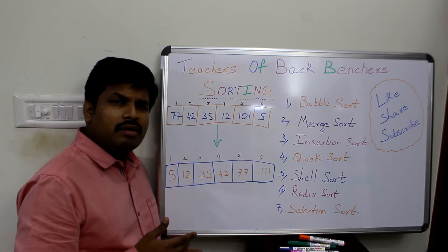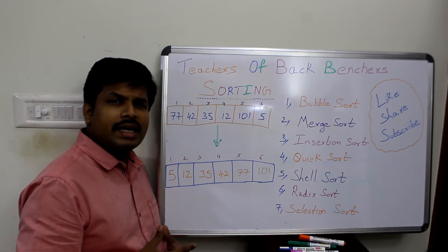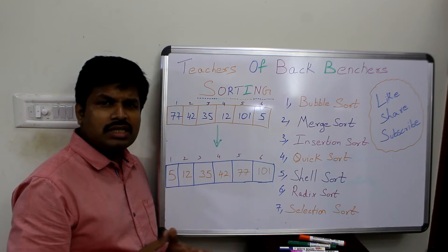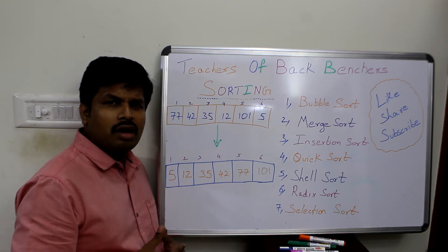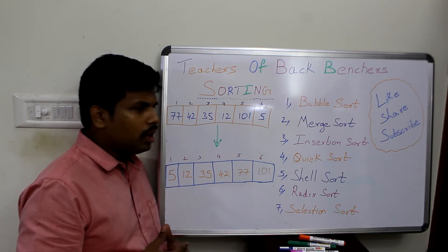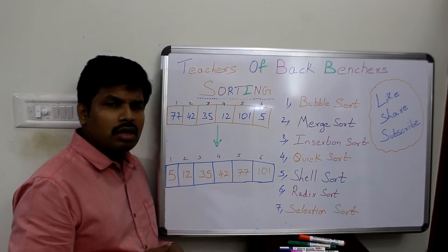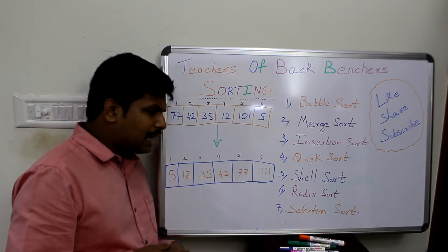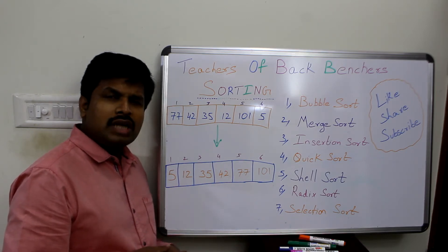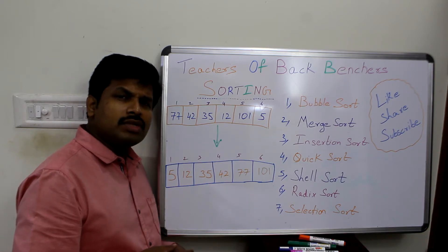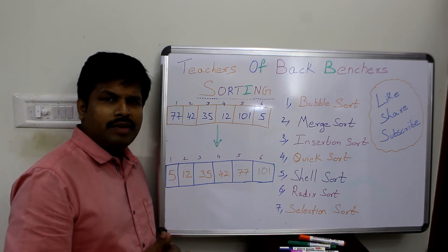According to its name and comparing with all the other techniques, quick sort is the most fastest algorithm technique in sorting process. The next one is shell sort, radix sort, and the last one is selection sort. These are the seven sorting techniques which we are going to see in the upcoming videos.